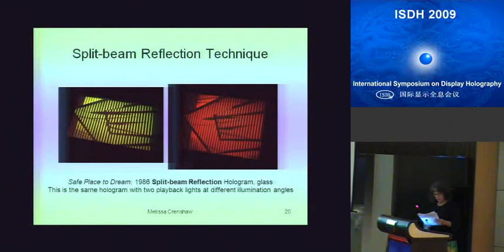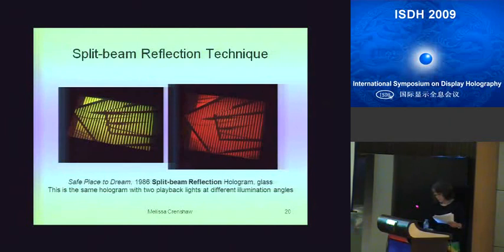An example from this work is shown here. This is the same hologram with two different lights — one light coming in at one angle and another at a completely opposite angle — generating a two-color image. This is called Safe Place to Dream, made after returning from China in 1985 and working with Dr. Hsu. It has bamboo in it and was my sort of homage piece to that experience.